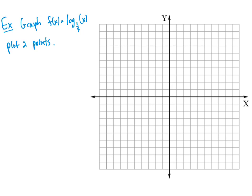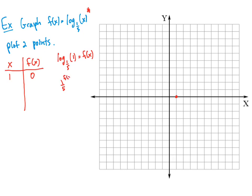In this example, we want to graph the function f of x is equal to log base 1.5 of x, and we want to plot two points. Any time we have a log function in this form, we can think of it as the parent function, which goes through the point (1, 0). We can check this: log base 1.5 of 1 means 1.5 raised to some value f(x) equals 1. Anything raised to the 0 power equals 1, so f(x) equals 0. That gives us (1, 0) as one of our points.